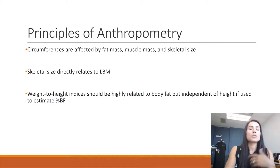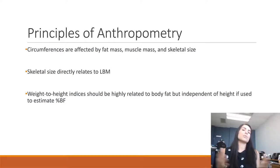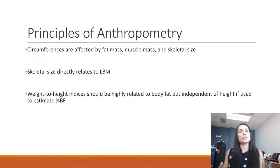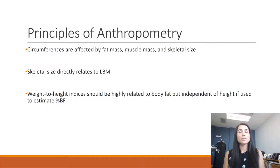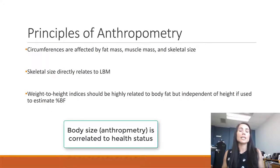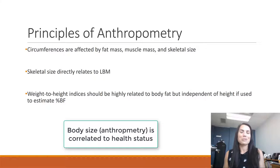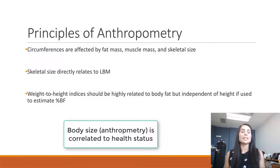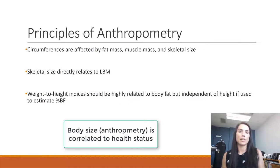Circumferences are used under the principle of anthropometry because we know that circumferences affect fat mass, muscle mass, and skeletal size, and in many ways someone's circumference can be indicative of health status. Skeletal size is directly related to lean body mass — the more dense their tissue, the more lean body mass they have. We also know that body-to-height indices should be highly related to body fat but independent of height if used to estimate percent body fat.